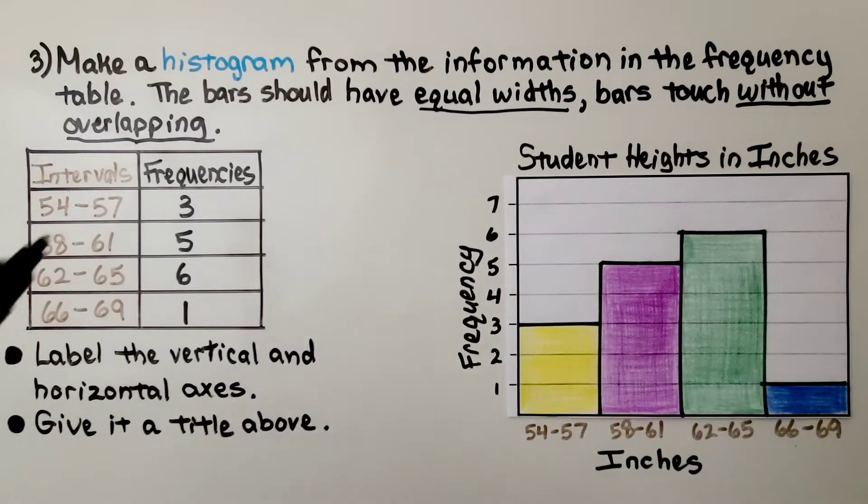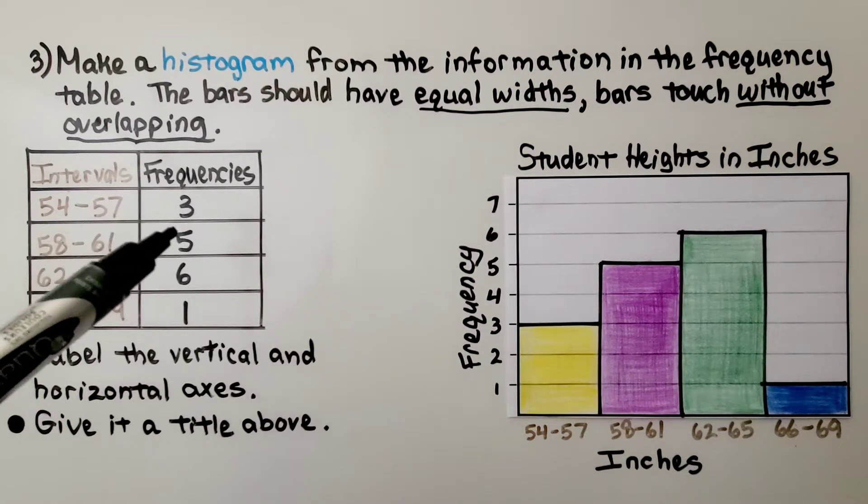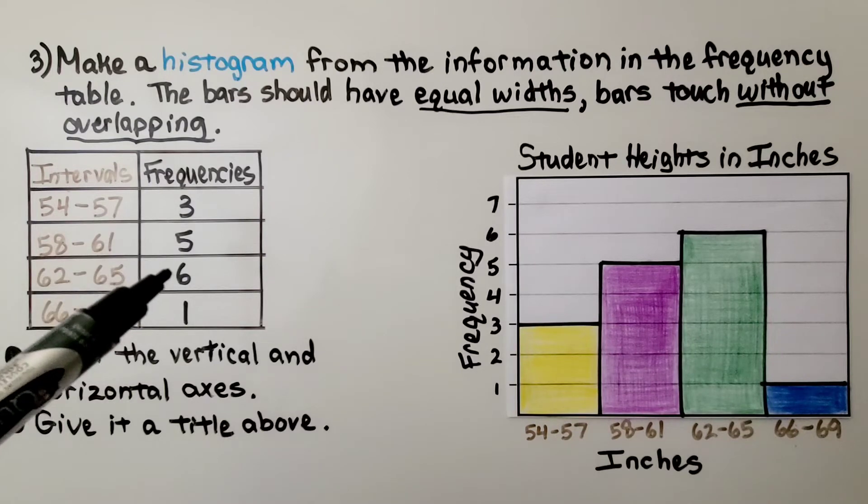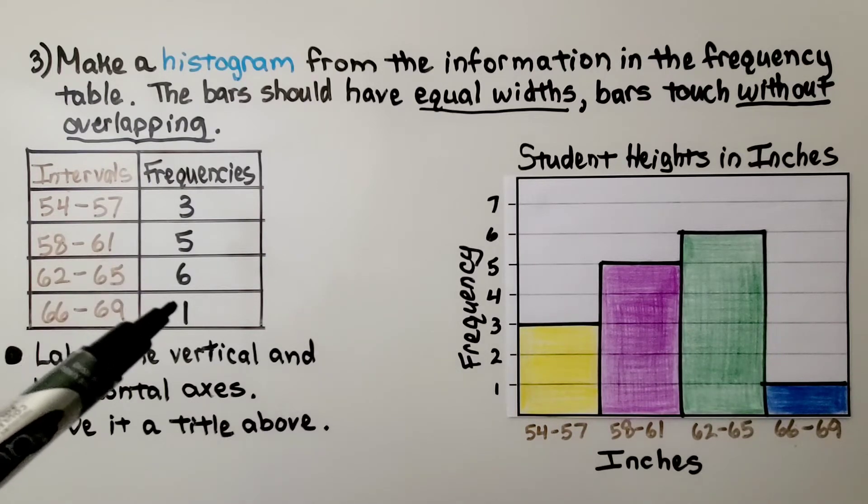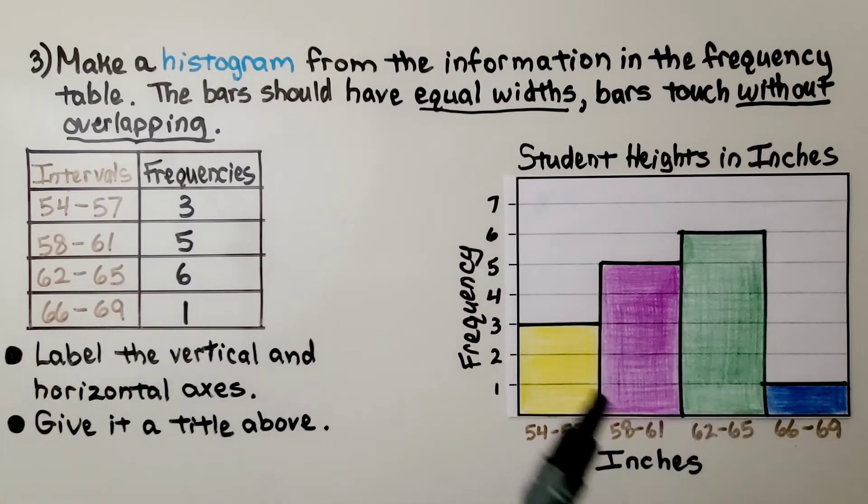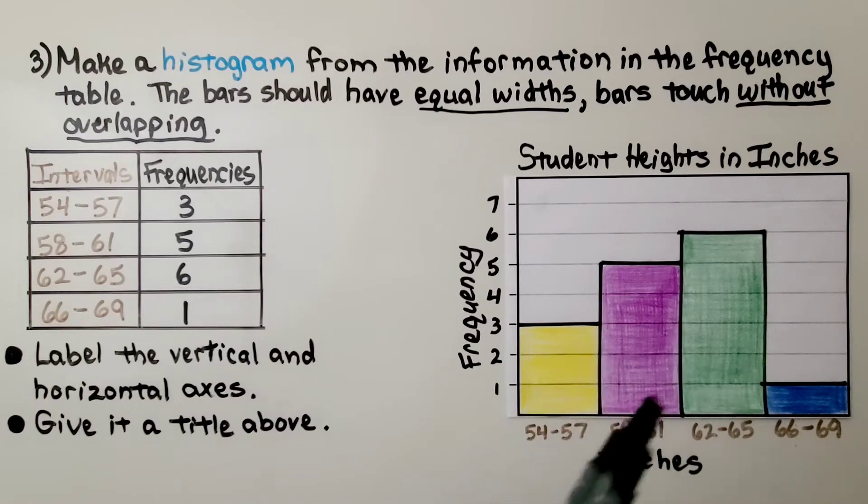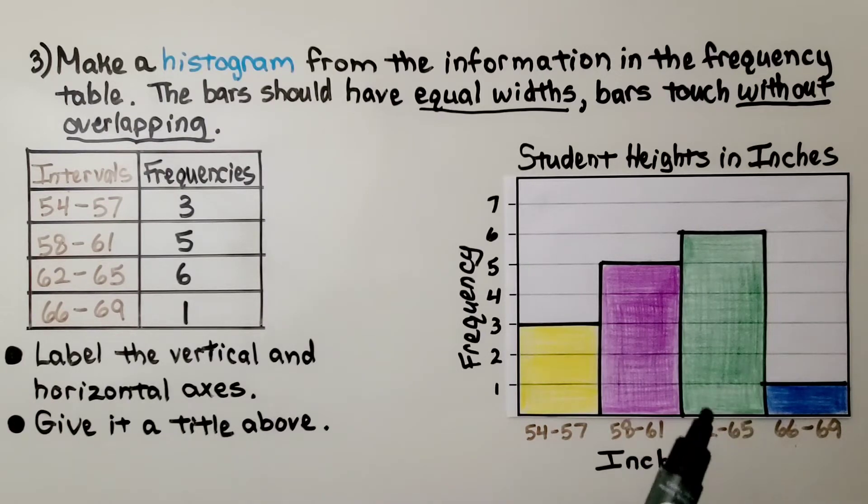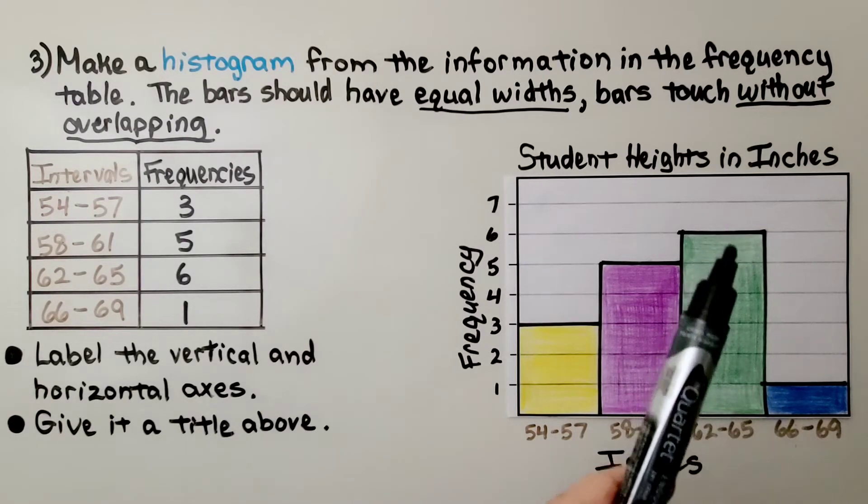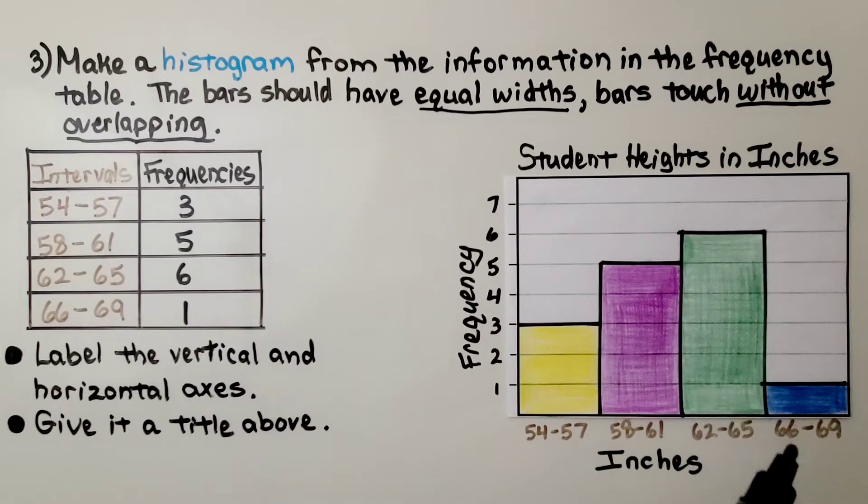We know there are 3 plus 5 is 8 plus 6. That's 14. And one more is 15. We know that the student heights in inches is for 15 students. We can see what the most typical height is. It's between 62 and 65. That bar is the highest. And we can see students from 66 to 69 inches tall. There's only 1 that is that tall. So that's not as common.